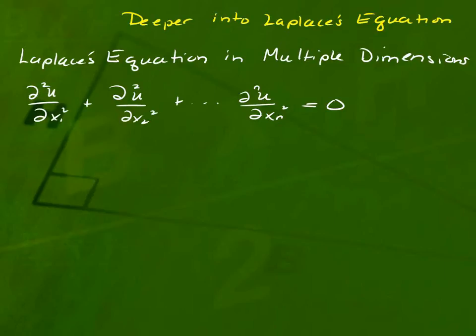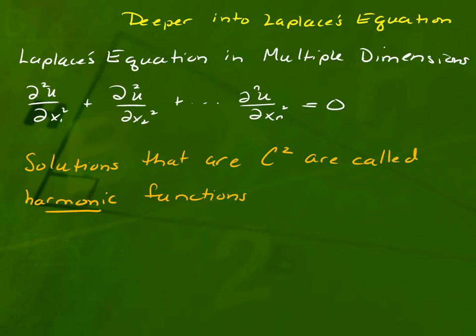There is a book called The Maximum Principle where they use the maximum principle to prove things about Laplace's equation. Solutions to Laplace's equations that are C² are called harmonic functions. In physics, they talk about harmonic functions quite a bit. I was always confused, how do they do this without PDEs as a background course? Because the definition of a harmonic function is that it's a C² solution of Laplace's equation.